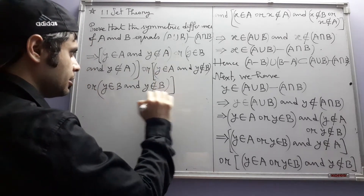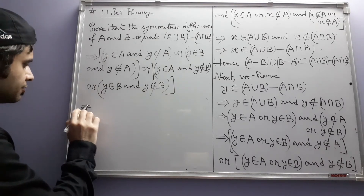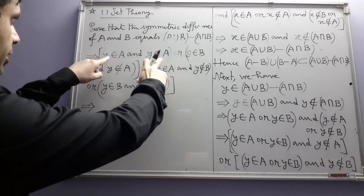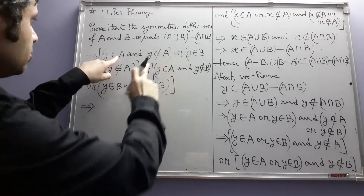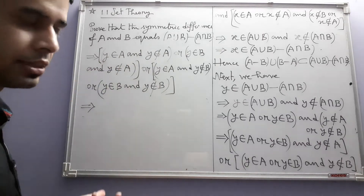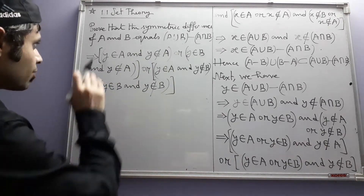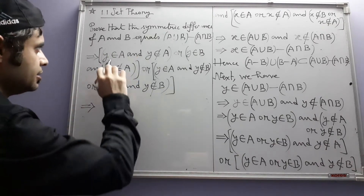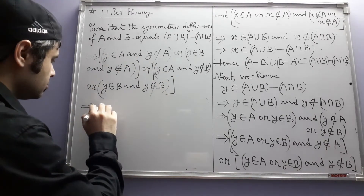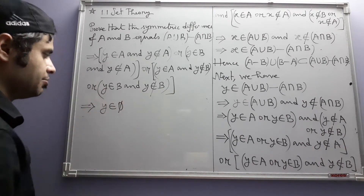Also, the brackets are very important — they keep track of the order of operations. Now, what is this? Y belongs to A and Y does not belong to A. This obviously cannot happen, so in place of this you can write an impossible statement.